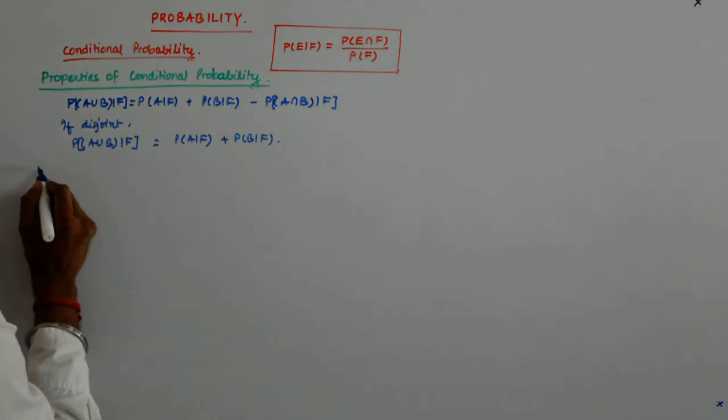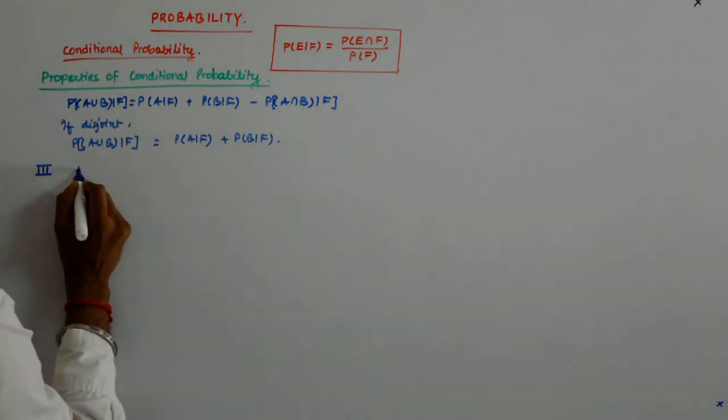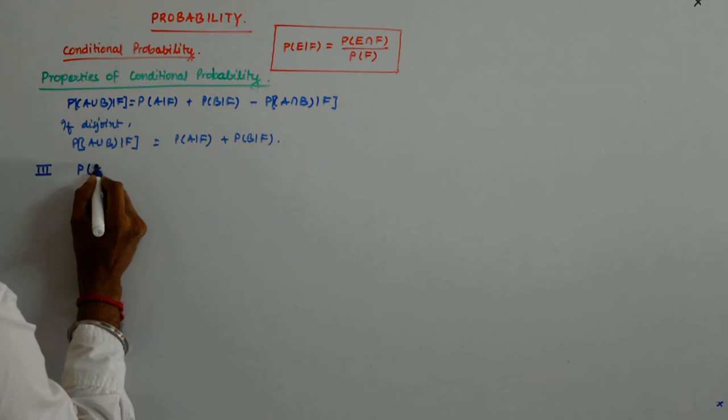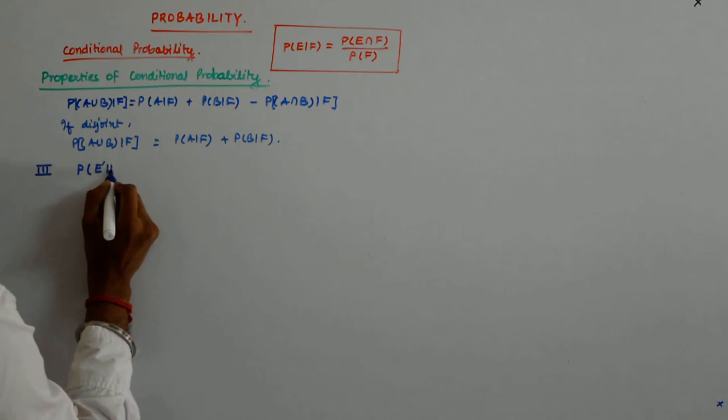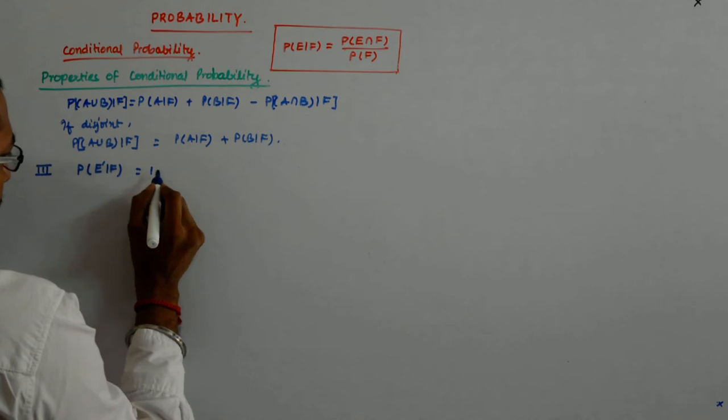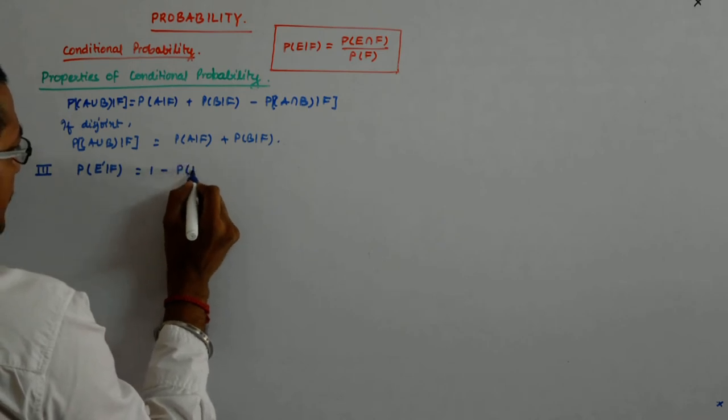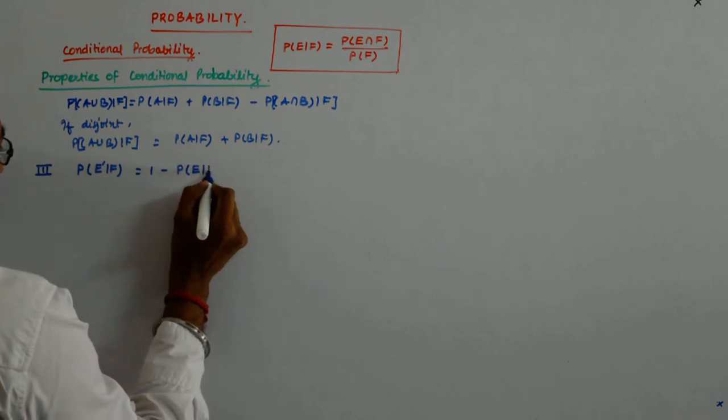We will use this in proving the third property that P(E complement|F) is equal to 1 minus P(E|F).